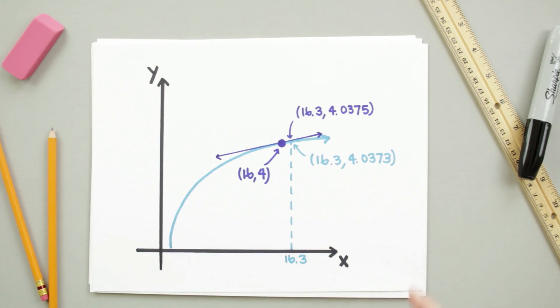Looking at the graph of the function, plus the tangent line that runs through the point 16, 4, we can see that we get really similar values when we plug 16.3 into the original function and into the tangent line. In fact, the actual square root of 16.3 is 4.0373. So, the answer we found seems like a pretty good estimate.